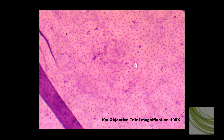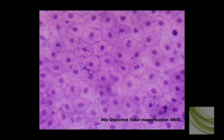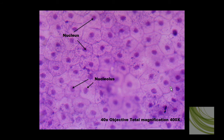Notice simple squamous always has an irregular shape — it's neither square nor columnar, it is completely irregularly shaped. We can see some nuclei in here. By the time we get to the 40x objective for a total magnification of 400 times, we can actually see the irregular borders of the simple squamous epithelium. We can see the nuclei, and the little dark dot is the nucleolus. So we can see a lot of different little nuclei in here.